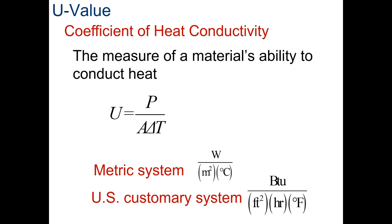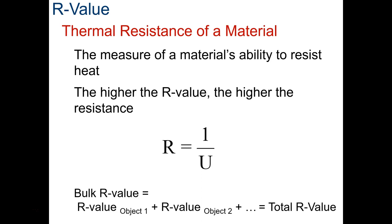U value. The coefficient of heat conductivity. The measure of a material's ability to conduct heat. You want to write that down and also get the equation. That is U equals P over A delta T. Metric system, you want to write these units down: watt per meter squared degree Celsius. US customary system is BTU per foot squared times hour times degree Fahrenheit. BTU stands for British Thermal Unit, which is funny because they don't use that system anymore, they have gone metric. But we still use it here in America.